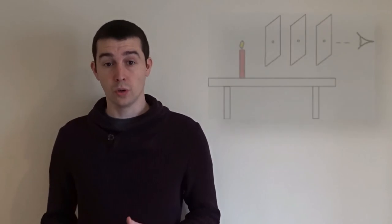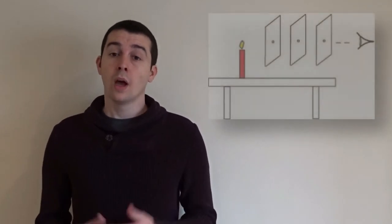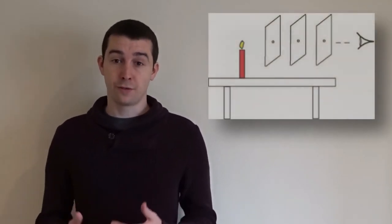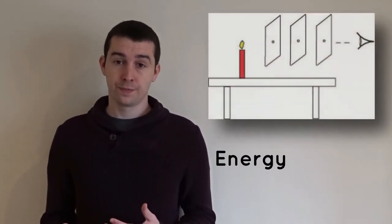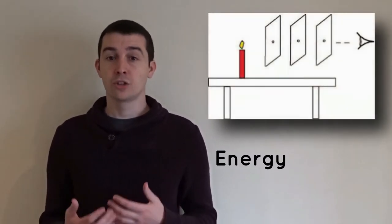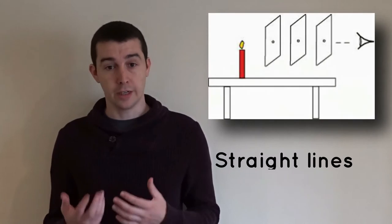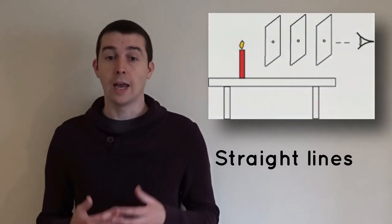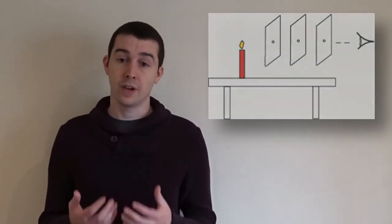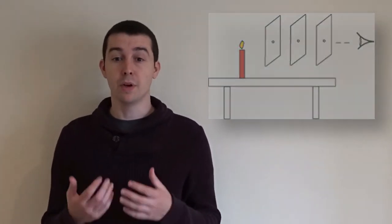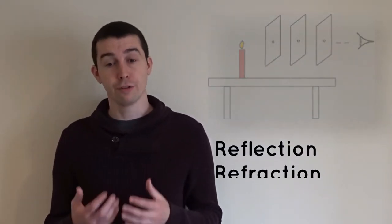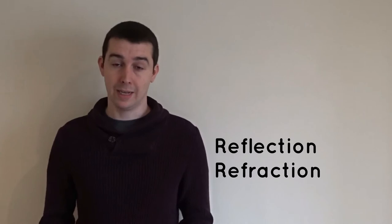What do we know? Light is a form of energy, light travels in straight lines, and light can be reflected by a mirror or refracted by a lens.